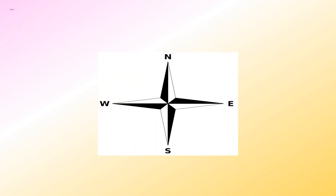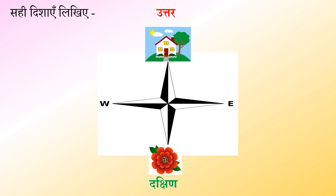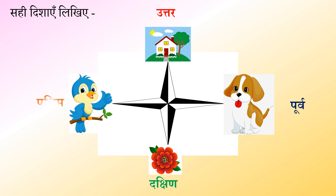बच्चों, अब आप चित्रों को ध्यान से देखिए और बताइए कि चित्र किस दिशा में है। घर किस दिशा में है? — उत्तर। फूल किस दिशा में है? — हाँ, बिलकुल सही — दक्षिण। पिल्ला किस दिशा में है? — पूर्व। चिड़िया किस दिशा में है? — पश्चिम दिशा में।